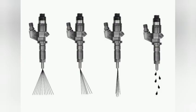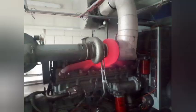The combustion chamber has an air-fuel ratio — most engines have a 14.1:1 combustion ratio. When excessive fuel enters the combustion chamber, not all the fuel burns properly, and some remaining unburned fuel goes to the exhaust line, making the exhaust red and hot.